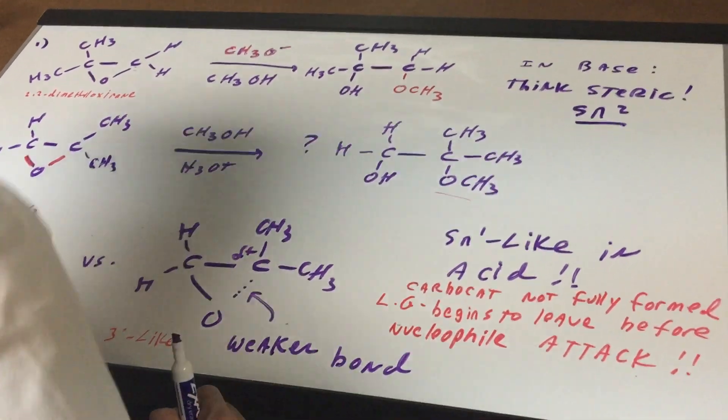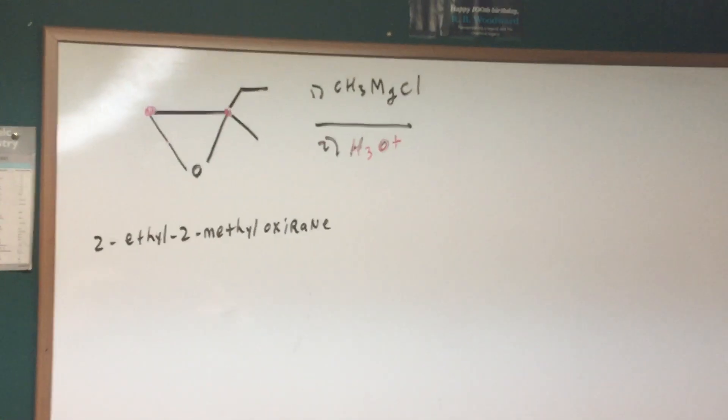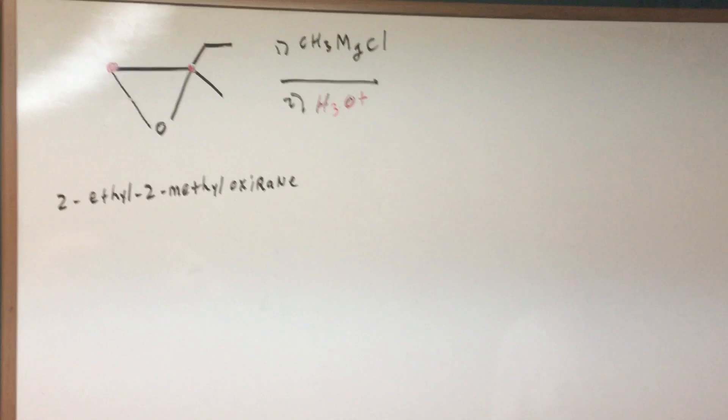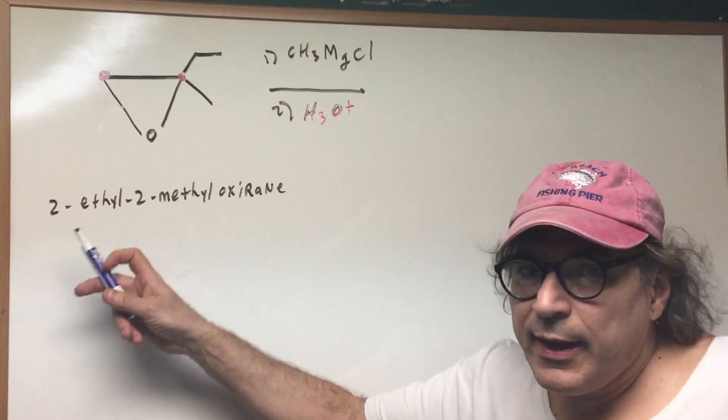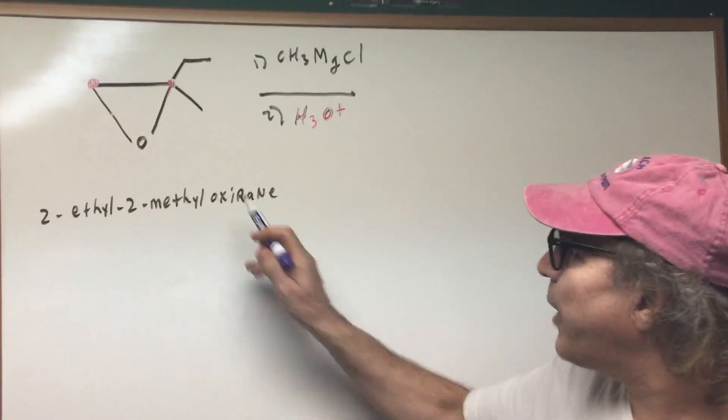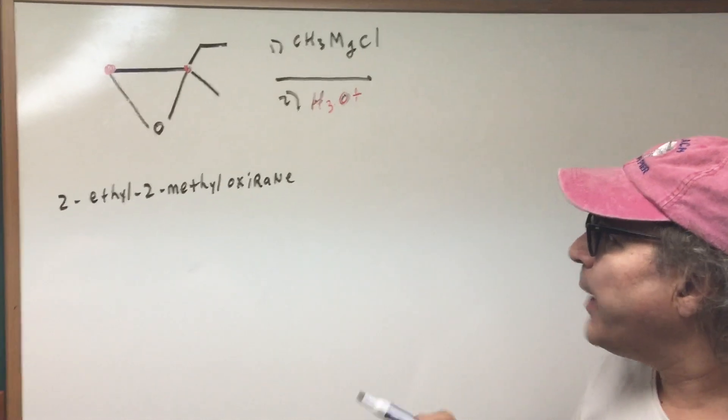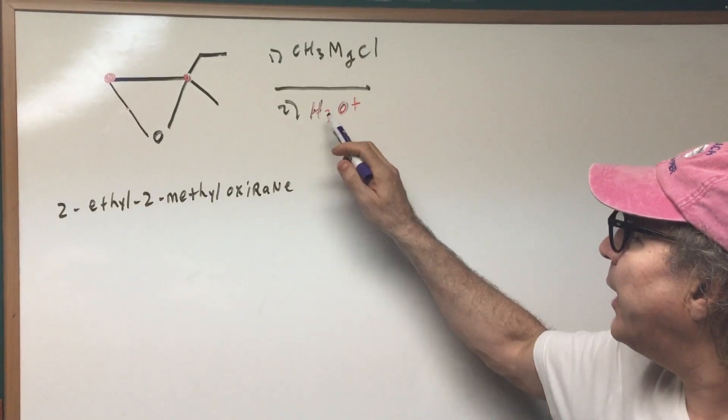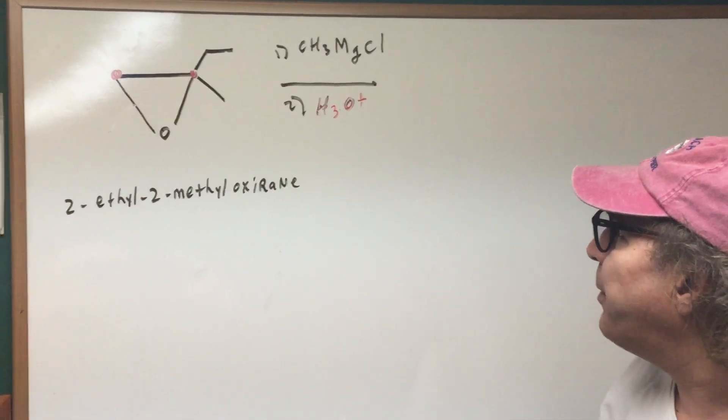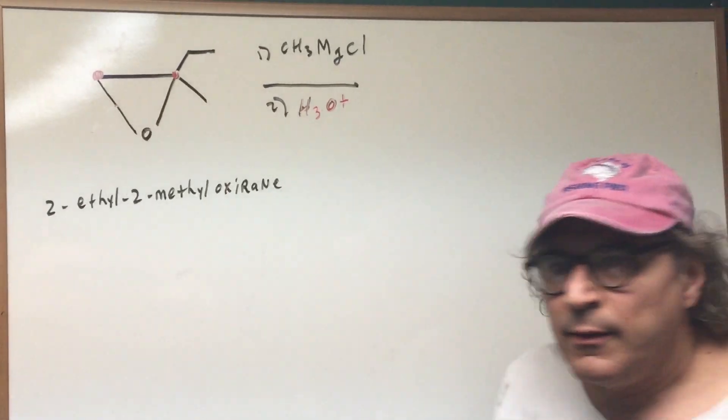Let me show you one final problem that I did for you on the board. And let's see if we could go about solving it. In this example, I give you 2-ethyl-2-methyl oxirane. Now, I treat it with a Grignard and then work up with H3O+.